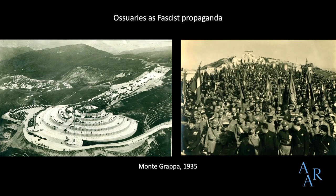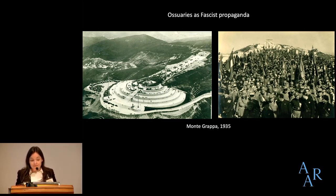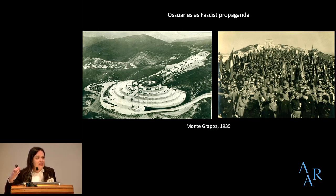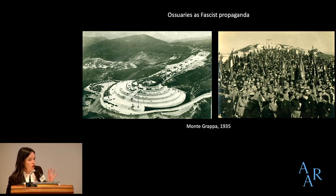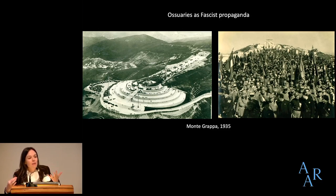New railways and roads were built to make these sites accessible. Large political ceremonies were held at the sites. Tours were also organized, especially for schoolchildren, veterans, and fascist youth organizations. The ossuaries were also promoted through newspapers, pamphlets, photographs, and other means of propaganda. The political function was cut short by the Second World War, which halted travel to these sites. But in intention, they were meant to be places where Italians would be inspired by ideals of victory, heroism, and nationhood.